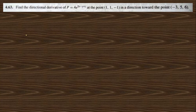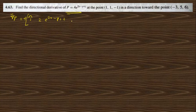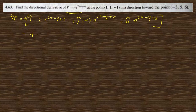Moving to the next question 4.63: find the directional derivative of p at a given point in the given direction. We need to find grad p. Taking the partial derivatives, we get grad p equals 2e^(2x-y+z) times (2i - j + k), since differentiating e^(2x-y+z) with respect to x gives factor 2, with respect to y gives -1, and with respect to z gives 1.